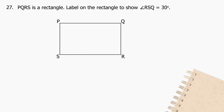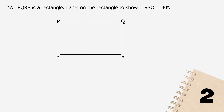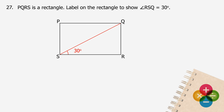Question 27: PQRS is a rectangle. Label on the rectangle to show angle RSQ equals 30 degrees. Draw a line from point S to point Q. The angle RSQ is shown in red.